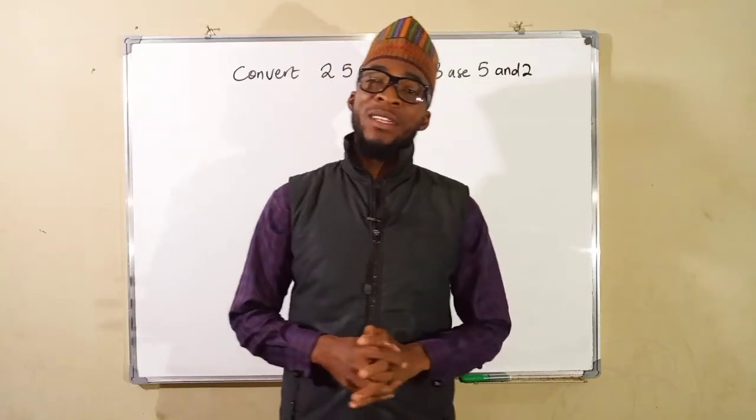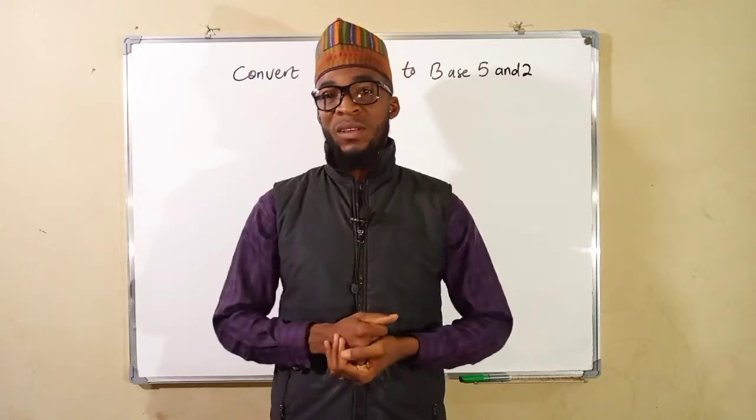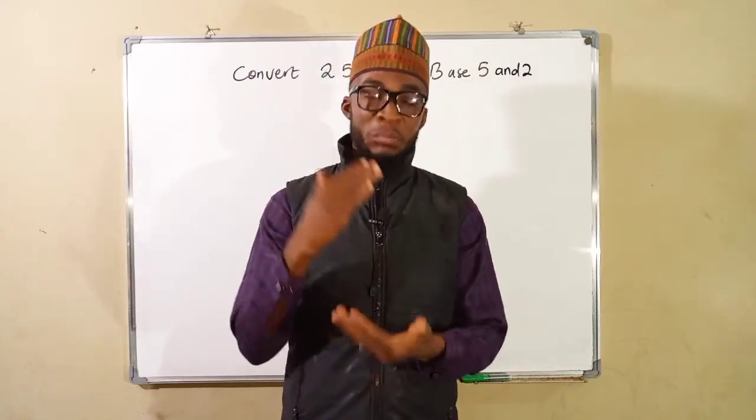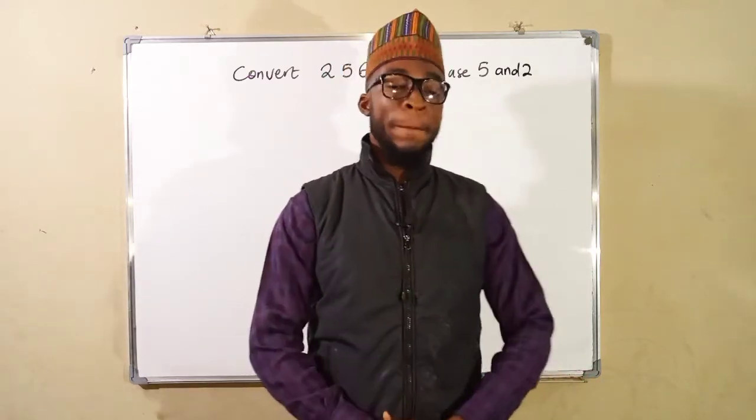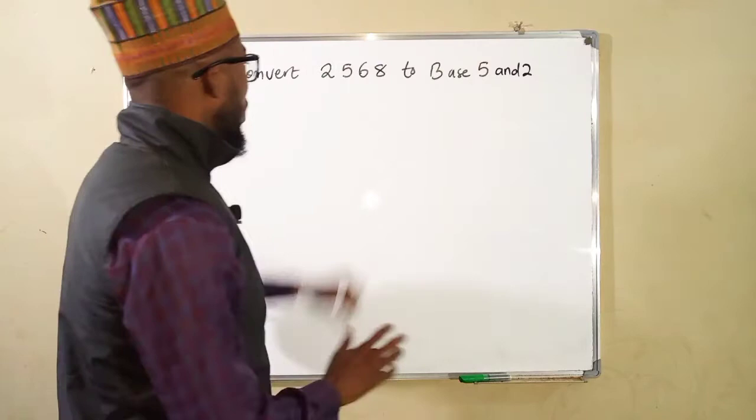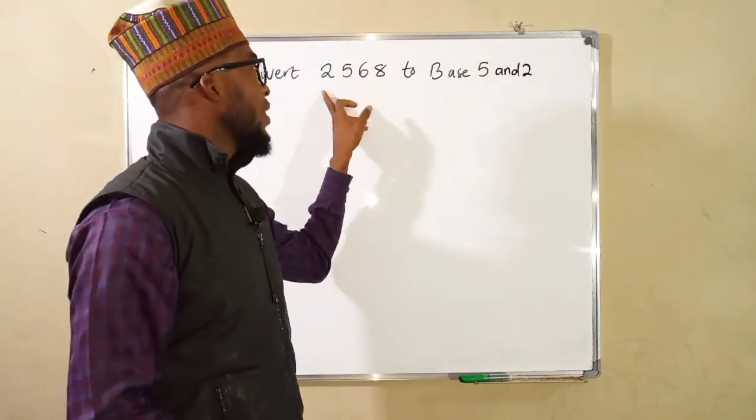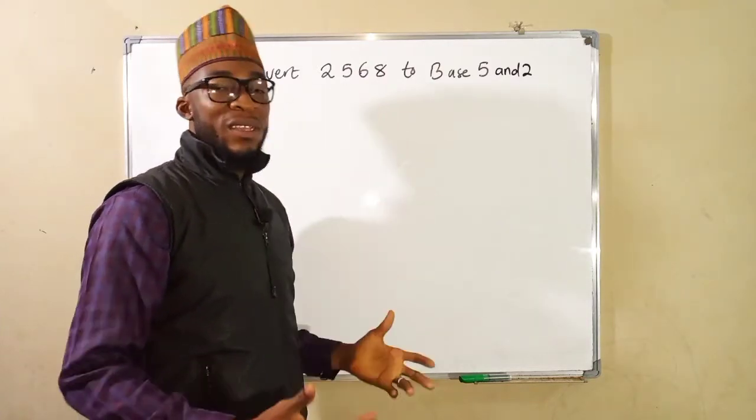Hello good morning everyone, still on how to convert numbers from base 10 to other bases. In this tutorial we are going to convert another number which is in base 10 to base 5 and base 2 respectively. So what we have here is 2,568 and you can see it does not contain any assigned base which means that it is in base 10.